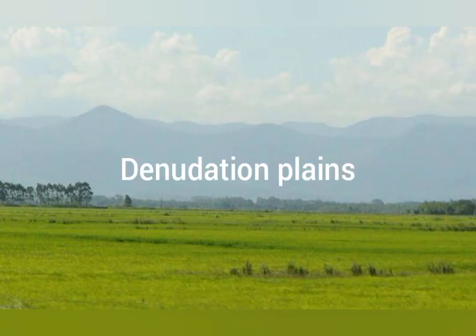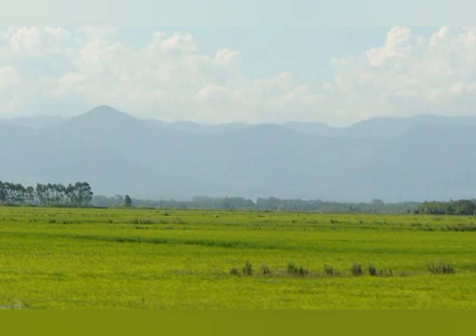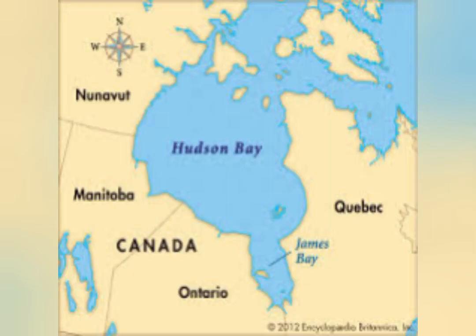Another form of Plains are the Denudation Plains. These plains have been formed because of a prolonged period of erosion by rivers, running water, glaciers, wind and other agents of erosion or denudation. Because the highlands have been continuously eroded over a long period, these plains have been formed. The Hudson Bay region of North America is an example of such plains formed by denudation.